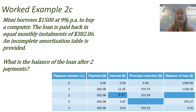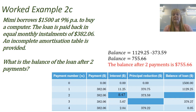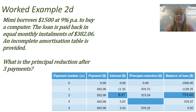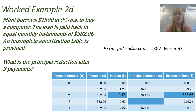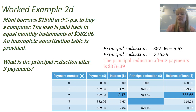Question C asks for the balance of the loan after two payments. We take the balance of $1,129.25 and subtract the principal reduction of $373.59, giving a balance of $755.66, which we enter into the table. Question D asks for the principal reduction after three payments: $382.06 minus the interest component of $5.67 equals $376.39 — and we enter that into the principal reduction column.